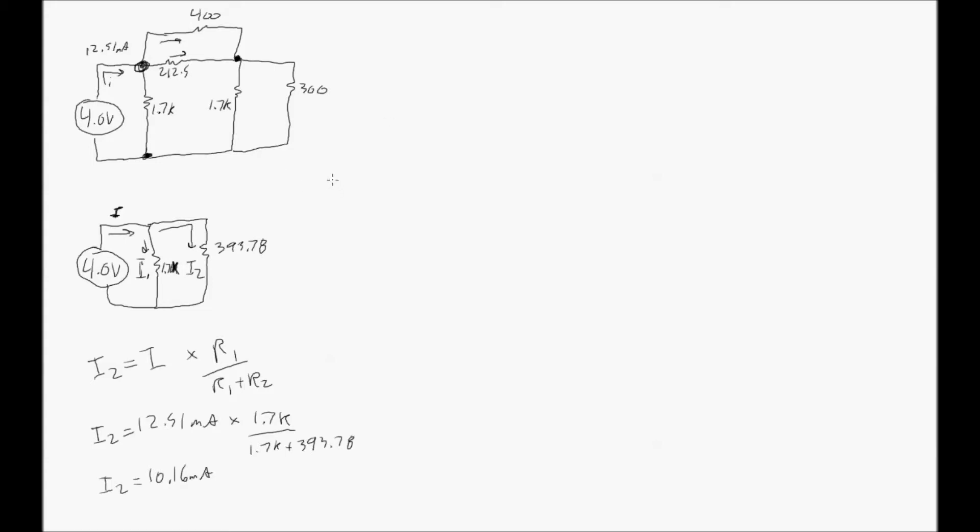I simplified the circuits down to this point here where we're left with current flowing through one branch, the 1.7K resistor. I'll call that I1. And the second branch, which is an equivalent resistance of all other resistors. Everything here, all the resistors here, are now equivalent to the 393.78 ohm resistor.